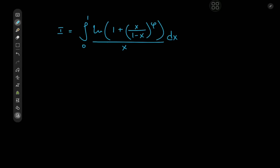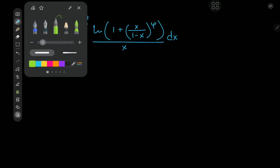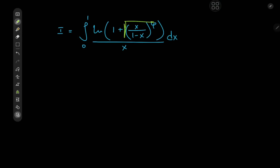Today we have the integral from 0 to 1 of log((1 + x)/(1 - x)) all raised to the φ, where φ is of course the golden ratio, divided by x dx. To begin the solution development, we'll do something about the x/(1 - x) term, because it would be nice if this whole thing was just some nice variable like t, without any exponents other than 1.